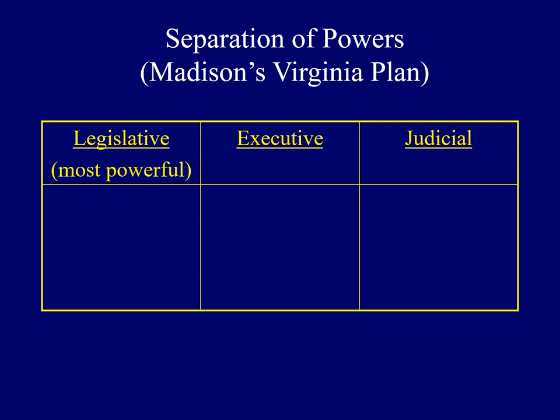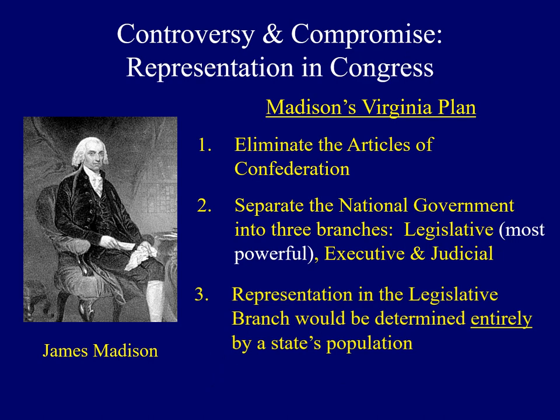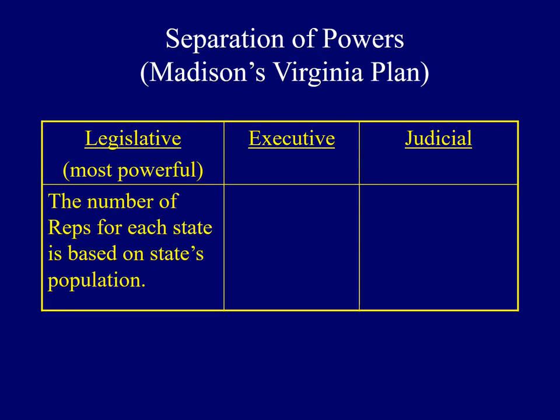Madison argued that the legislative branch should be the most powerful of the three branches. While those first two proposals met with approval, Madison's third main idea was very controversial. He argued that representation in the legislative branch should be determined entirely by each state's population. The number of representatives for each state would be determined entirely by each state's population. The big states thought this was a good idea, but individuals from small states disagreed wholeheartedly — they would lose a lot of power under this new system.